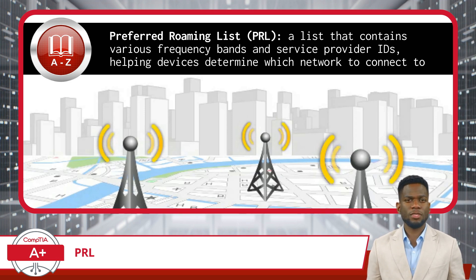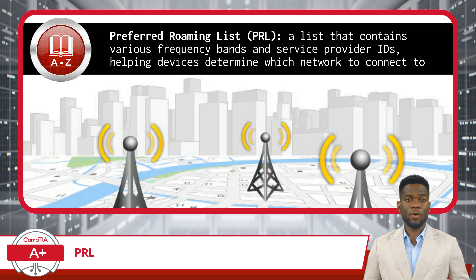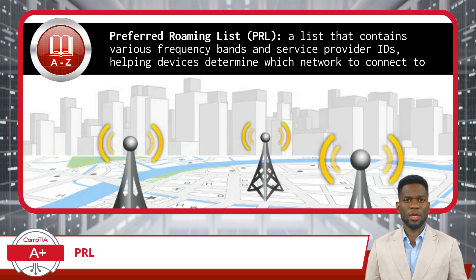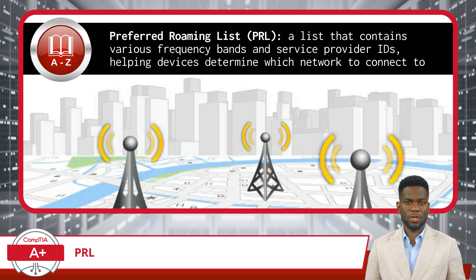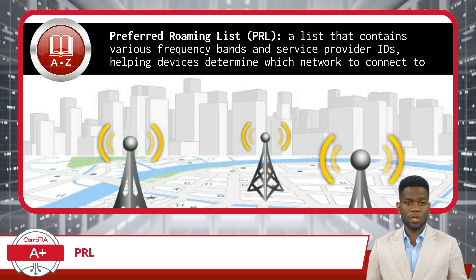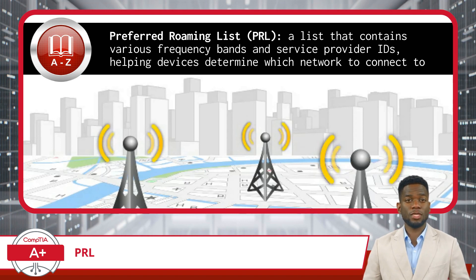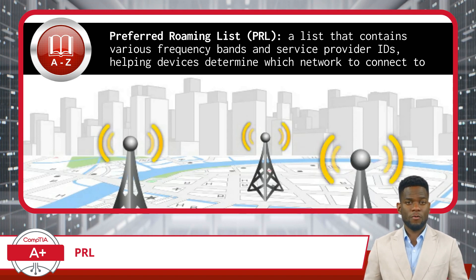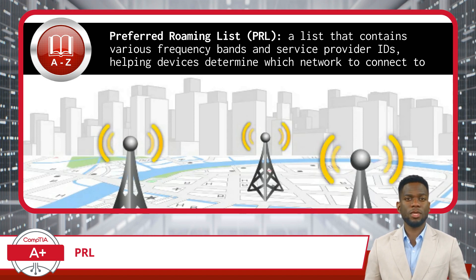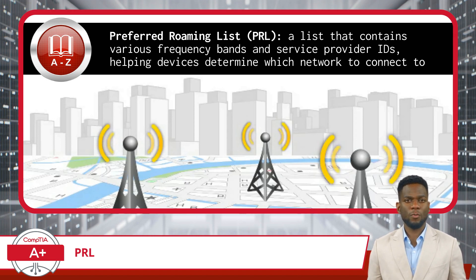To understand this definition better, imagine you're traveling abroad and your mobile phone seamlessly connects to local networks, allowing you to make calls, send texts, and browse the internet. This magic happens because of the PRL. This list effectively tells your device which cellular towers it should connect to, ensuring you have service even when you're away from your home network.